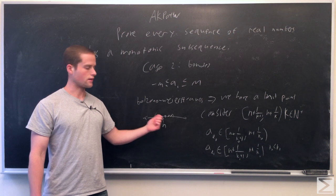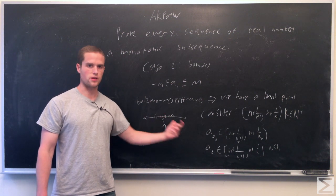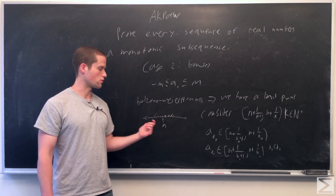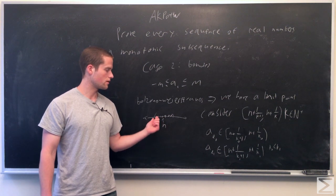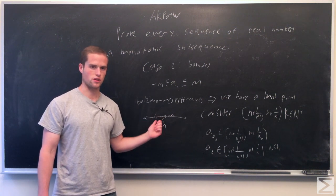We do the exact same thing if instead of these points being above n, they're below n. We would just do the exact same thing, and we would have a monotonically increasing sequence going up to n.